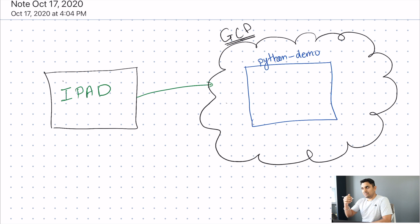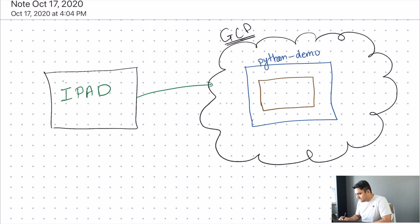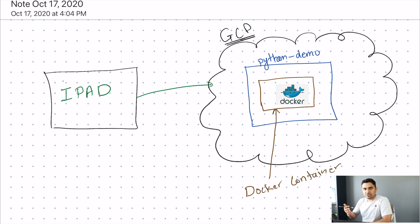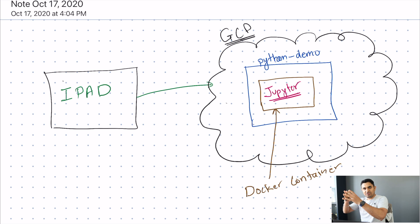Inside that virtual machine, we will load a Docker image that runs a Docker container, and inside that Docker container we will be running Jupyter Notebooks. Jupyter is the program that will let you run Python, Java, C++, or any kind of code on your iPad. Basically you are using your iPad as a user interface to connect to your virtual machine, and you'll be able to do everything you can do on a desktop or MacBook.